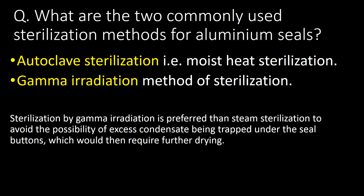What are the two commonly used sterilization methods for aluminum seals? Autoclave sterilization (moist heat sterilization) and gamma irradiation are the two commonly used methods. Sterilization by gamma irradiation is preferred over steam sterilization to avoid the possibility of excess condensate being trapped under the seal buttons, which would then require further drying.